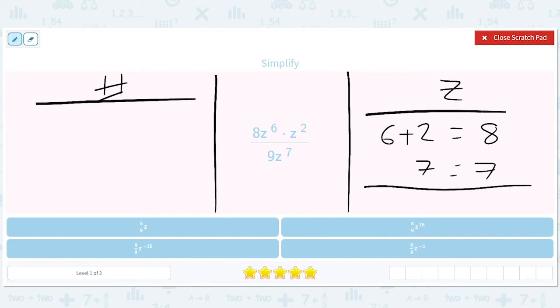And the way you deal with the numerator and the denominator is you subtract. So you have eight on top, seven on bottom, so you'll have a one in all, which gives us z to the power of one. And that's the same as z, so we can already tell this is the answer.